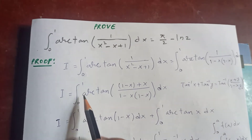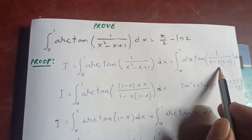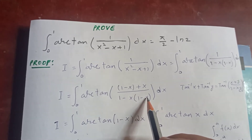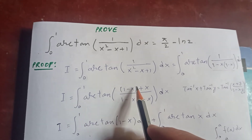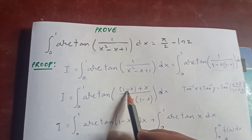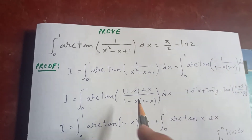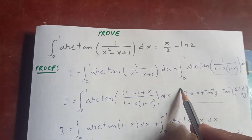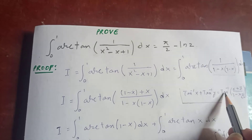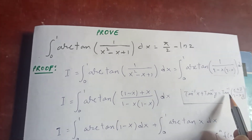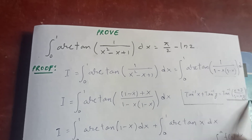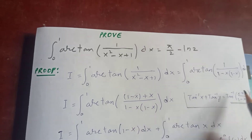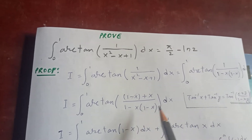So I is the integral from 0 to 1 of arctan of the term 1 minus x plus x over (1 minus x), times 1 minus x. Nothing has changed — those terms cancel and we come back to the original. We do this because we're going to use the identity: arctan(x) + arctan(y) = arctan((x+y)/(1−xy)). This expression matches exactly that form, with first argument x and second argument x.